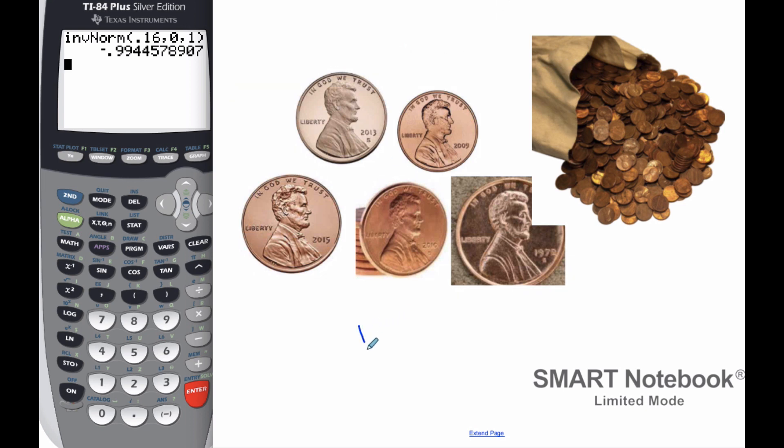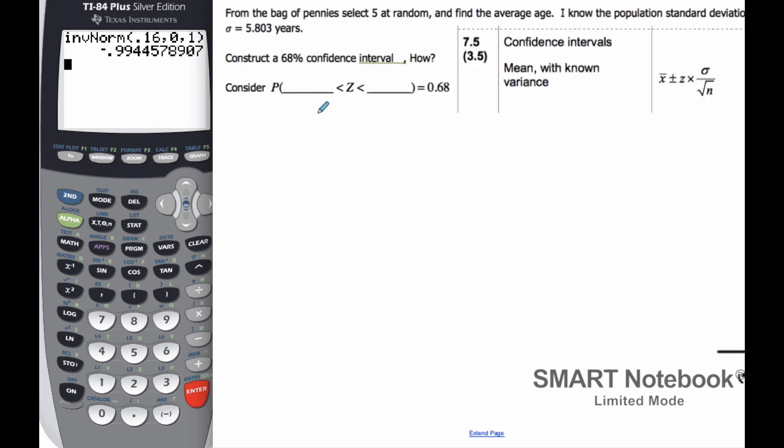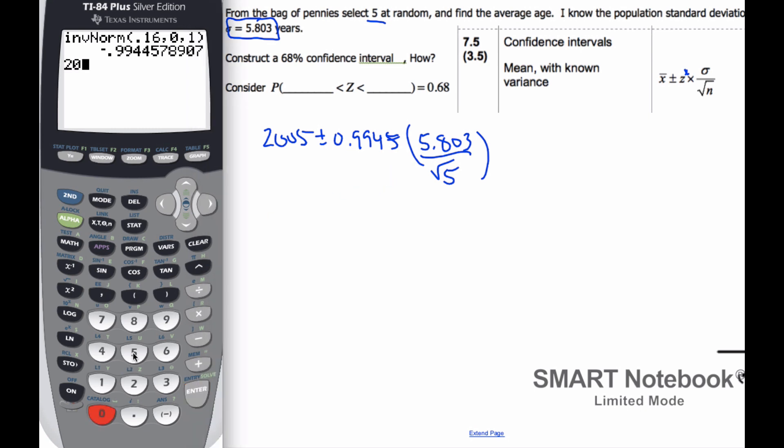If I calculate the average, I know the average I did earlier is 2005 exactly, which surprised me. But it happens to be exactly that. And so, what I'm going to do then is I'm going to come along over here, and I'm going to figure out my confidence interval. Well, I know my confidence interval is 68% is going to be 2005 plus or minus z star, which we'll remember is plus or minus 0.9945, times sigma is given to me as this value, times 5.803 over the square root of 5, because my sample was 5.